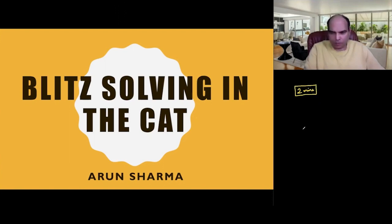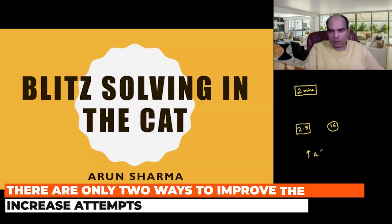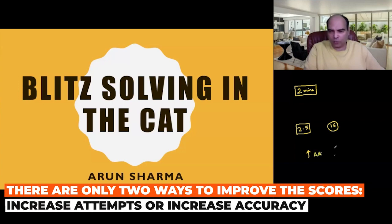Let's say you're solving a question every two and a half minutes. We're talking about the CAT pattern where a student is attempting 16 questions in 40 minutes. If this person wants to improve their score, there are only two ways: increase attempts or increase accuracy.